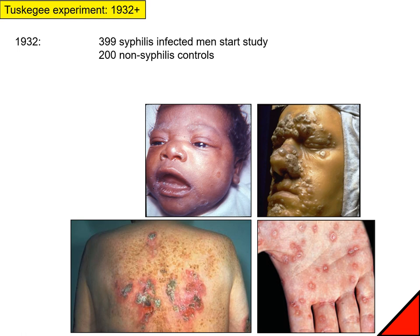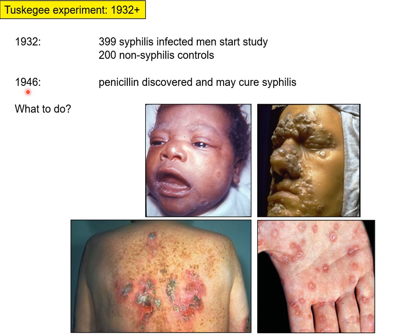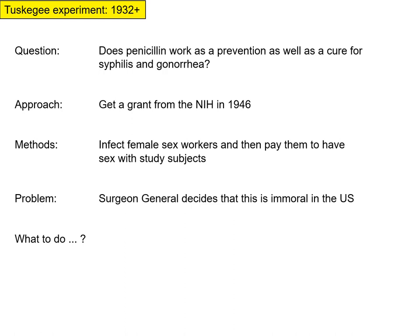In 1932 we start off with roughly 600 people. In 1946, after World War II, penicillin was discovered — our first really good antibiotic — and it turns out it might actually cure syphilis. With this group of 600 people, penicillin was now a real possibility, so what would be done? Instead of directly treating the people they had, they decided to conduct a parallel experiment: does penicillin work as a prevention as well as a cure for syphilis and gonorrhea? They got a grant from the NIH in 1946.